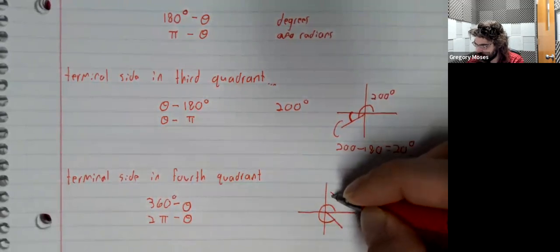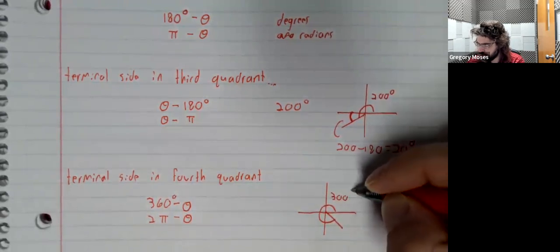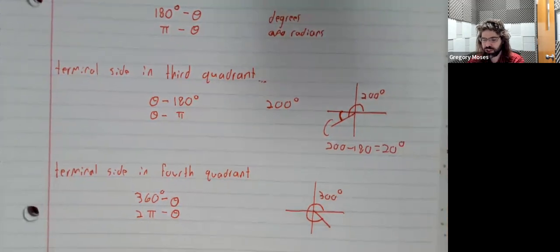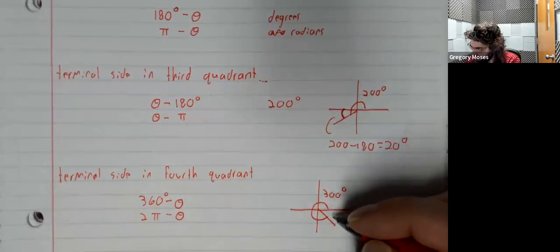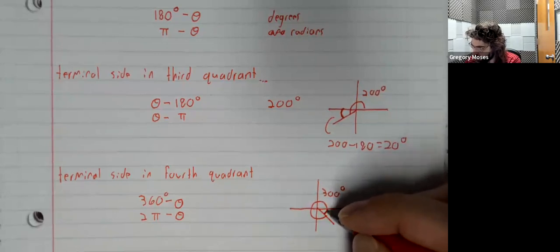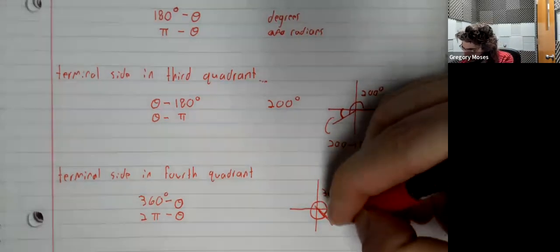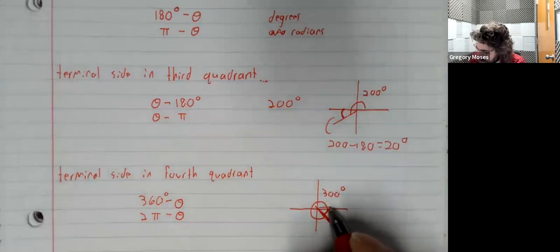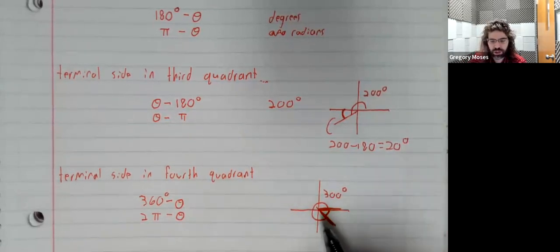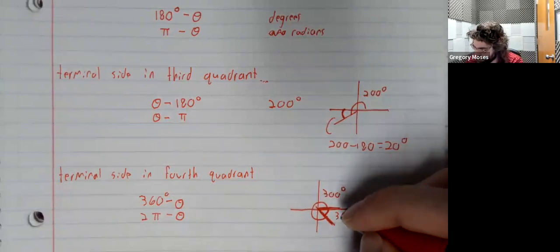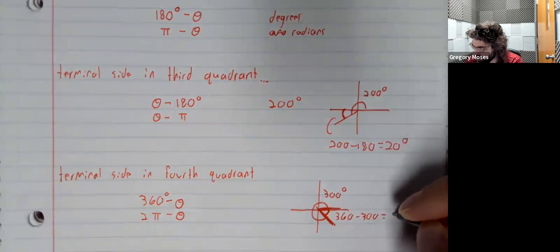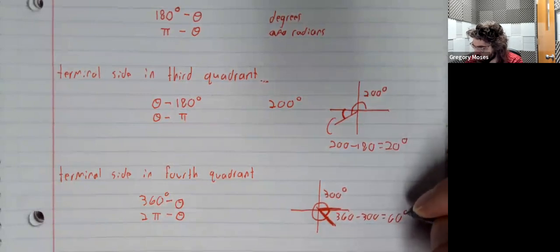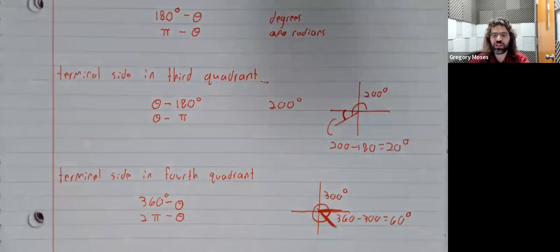So, 300 degrees brings us into the fourth quadrant. The reference angle, this smaller angle that is formed by the terminal side and the x-axis, 360 minus 300 is 60 degrees.